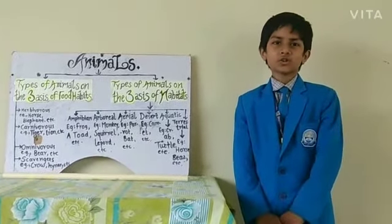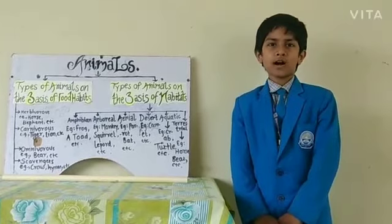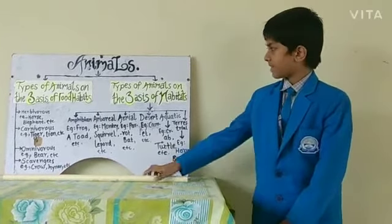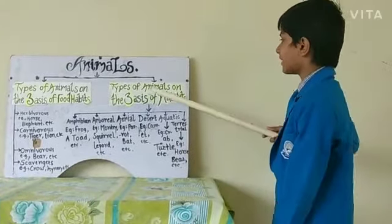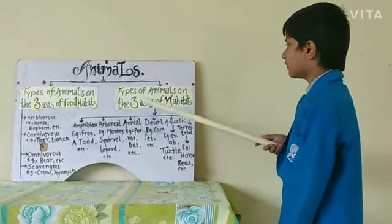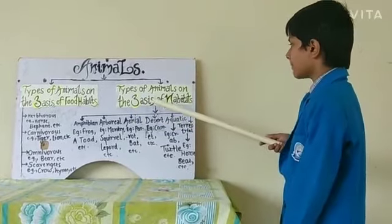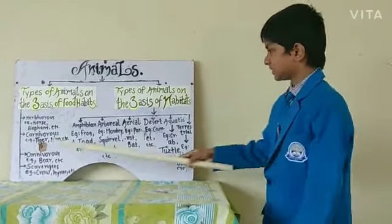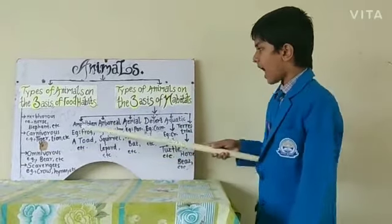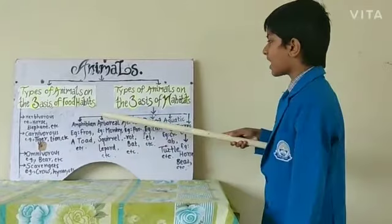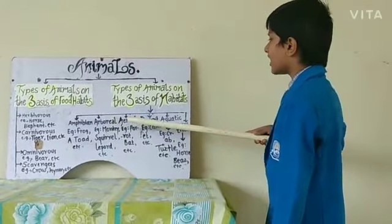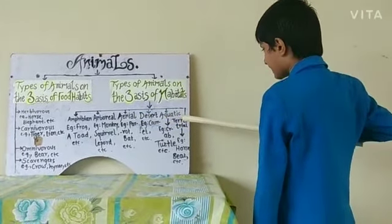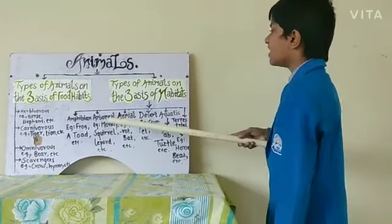So let's go to our next topic: types of animals on the basis of their habitat. There are six types: amphibious, arboreal, aerial, desert, aquatic, and terrestrial.